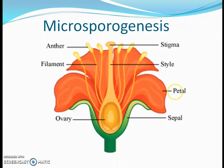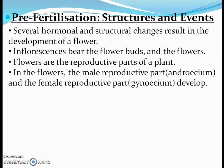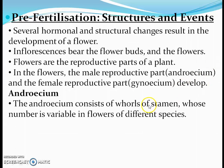So here we have to learn about the pre-fertilization structures and events. Several hormonal and structural changes result in the development of a flower. Flowers are the reproductive parts of a plant. The male reproductive part is known as Androecium and the female reproductive part is called Gynoecium.